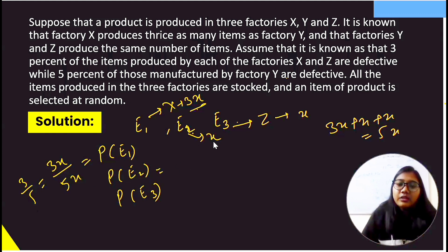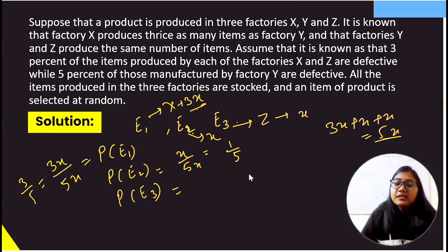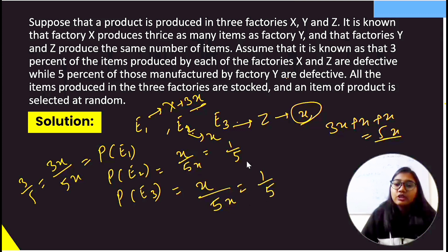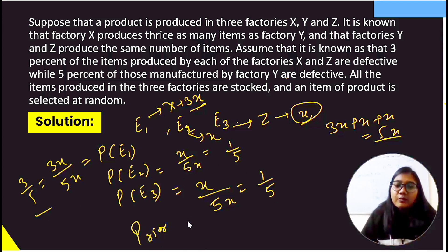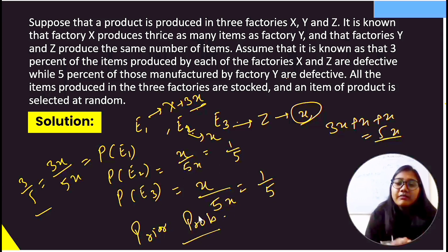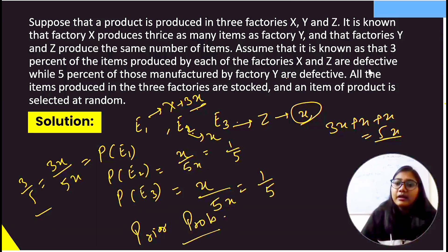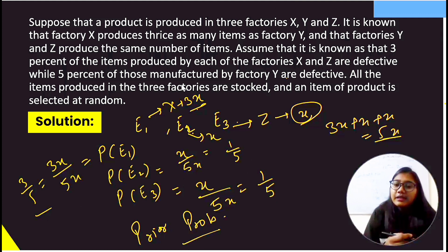So we have three prior probabilities: P(E1) = 3/5, P(E2) = 1/5, P(E3) = 1/5. Now the new information given is: 3% of items from X and Z are defective, and 5% of items from Y are defective.